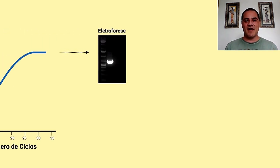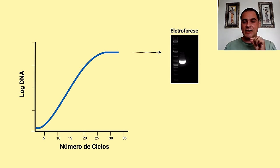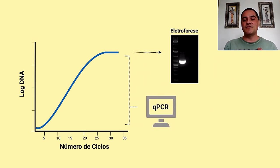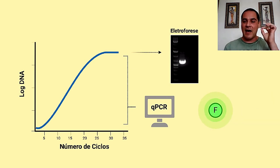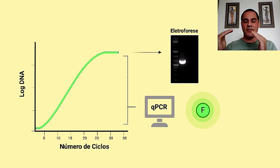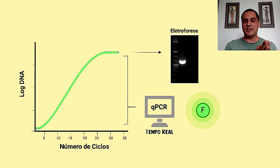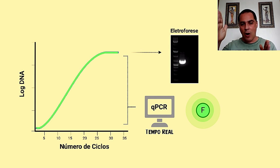O resultado da PCR clássica é o aparecimento ou não de bandas num gel — como vocês podem ver naquela figurinha de eletroforese, há aparecimento de uma bandinha ali. Na PCR em tempo real, a gente vai ter então um fluoróforo que vai estar presente na amostra e ele vai ser monitorado ao longo dos ciclos. À medida que a gente vai tendo uma amplificação do DNA, a gente vai tendo um aumento da fluorescência.